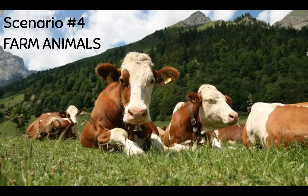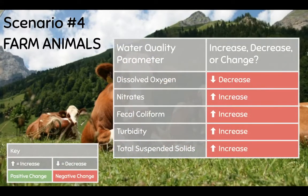How might having farm animals or pets near rivers affect water quality? If there is not enough of a buffer between the animals and the river, their waste can get washed directly into the river. Animal waste contains fecal coliform bacteria as well as nitrates. As Sam taught you in the last video, the introduction of nitrates negatively impacts the dissolved oxygen levels via eutrophication. Animal waste in the water also increases turbidity and total suspended solids.